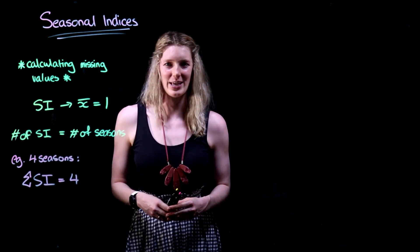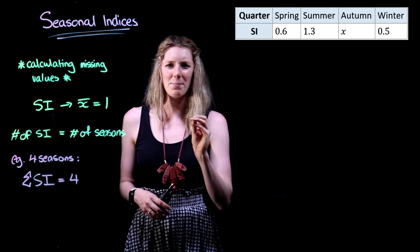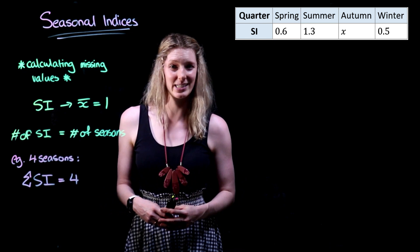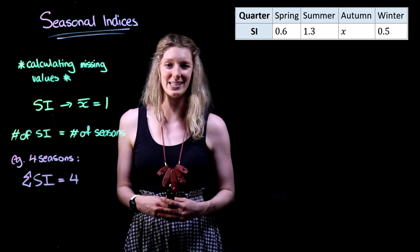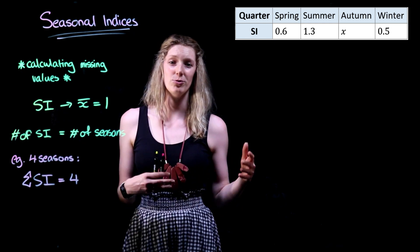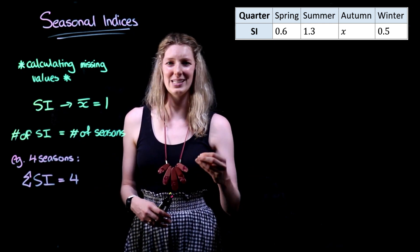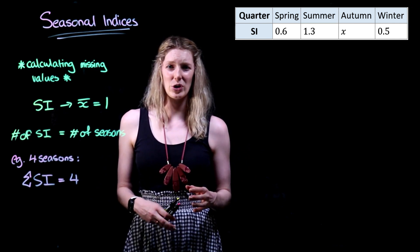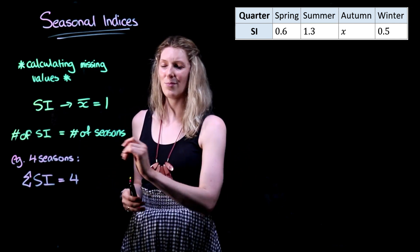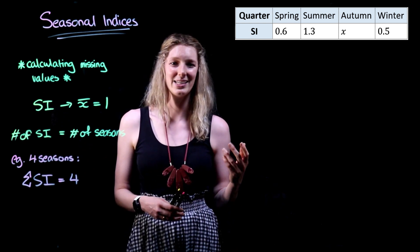We're going to use that concept to help us with this problem here, whereby we have been given an incomplete seasonal indices table for these four seasons. We can see that we have seasonal indices values for spring, summer and winter, however our autumn is unknown. We can use our knowledge that the sum of the seasonal indices equals the number of seasons to help us.